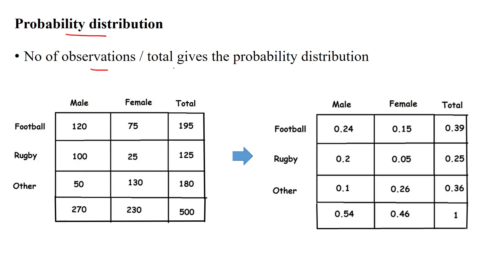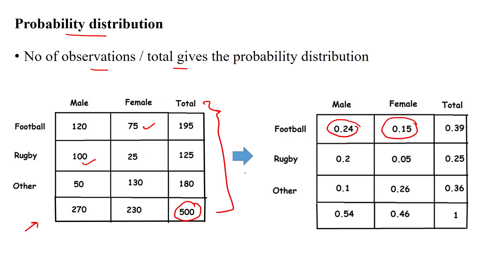The number of observations in total gives you the probability distribution. These are the values given in the dataset, and we convert them into probability theory. The total is 500. We find probabilities such as 120 divided by 500, 75 divided by 500, and 100 divided by 500. Like that, we calculate probability values for three types of events — football, rugby, and other events — watched by male and female audiences.